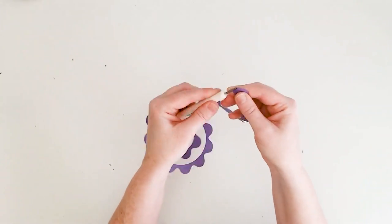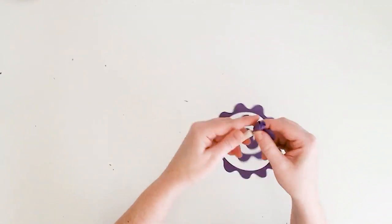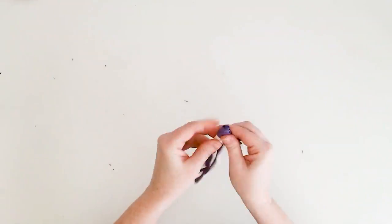Then begin rolling the cardstock around the tip of the quilling tool. And once you get the roll started, you actually might find it easier to remove the quilling tool to finish rolling the cardstock.